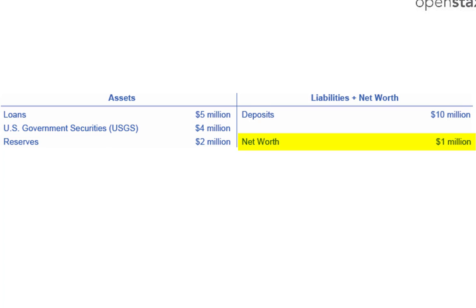If we use the balance sheet equation — assets equals liabilities plus net worth — we see the bank's net worth is one million dollars. If a bank's net worth is negative, then it is actually considered bankrupt.